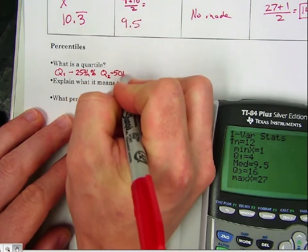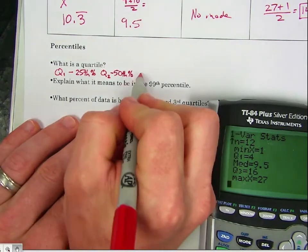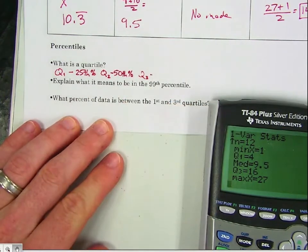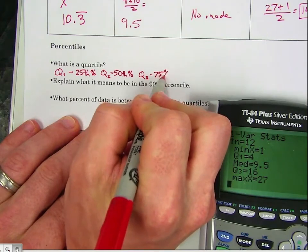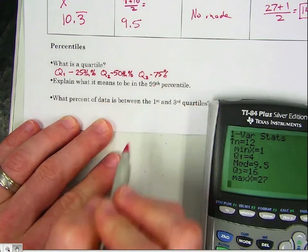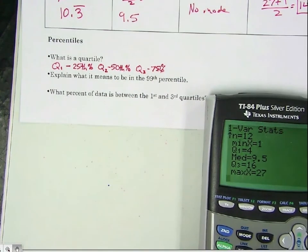which is the 50th percentile, also the median. And then we have Q3, which is the 75th percentile.